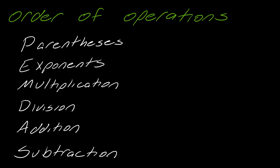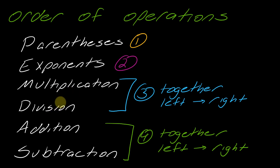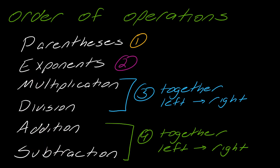In addition to PEMDAS, we need these clarifying cues. Parentheses come first, then exponents second. The thing that gets a lot of people is multiplication and division — these actually go together from left to right, whichever comes first. A lot of people miss this and think it's multiplication then division. Finally, addition and subtraction also go together from left to right, though those two don't tend to be as big of an issue.